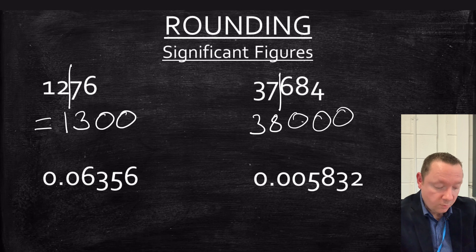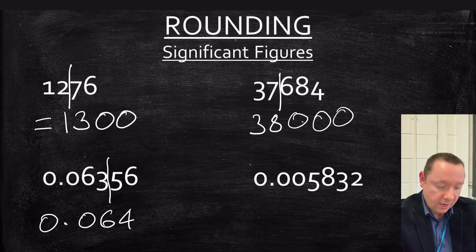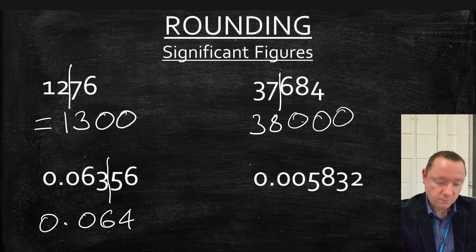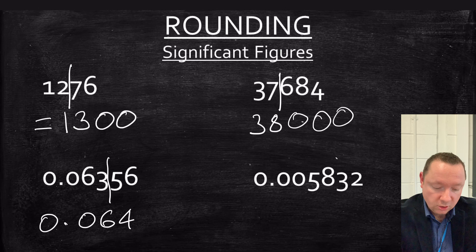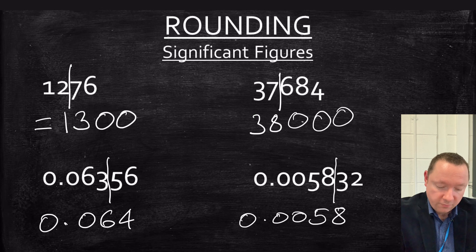Smaller numbers this time, so 0.06356. Well, I don't start counting until I hit a number, so the first significant figure is six. The second one's three, so I'm cutting here, so it's 0.06, and I need to round up to four. And in this case, I don't have to add any extra zeros. The next one, 0.005832, so to two significant figures I'd be cutting here, so I'd be getting 0.0058.